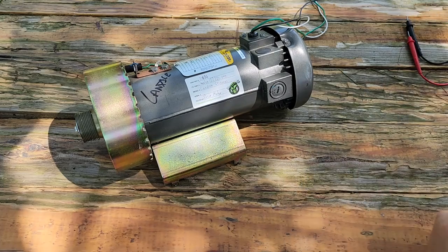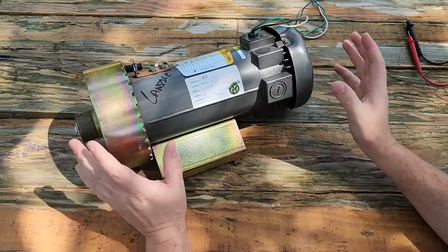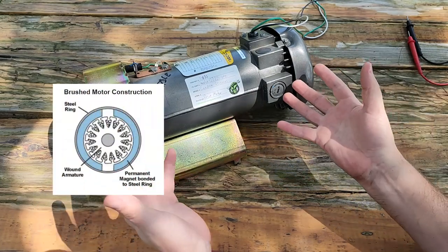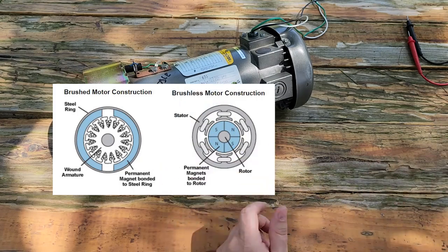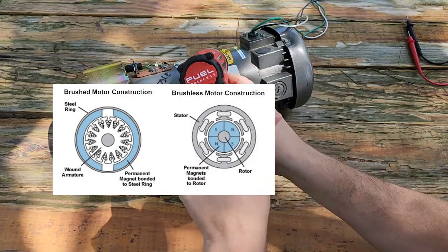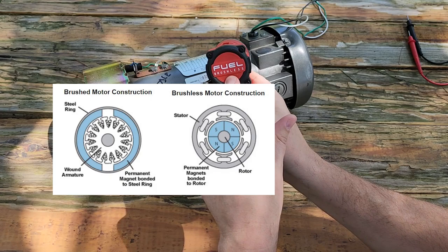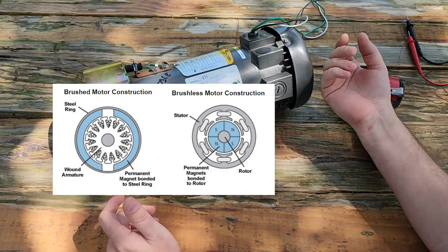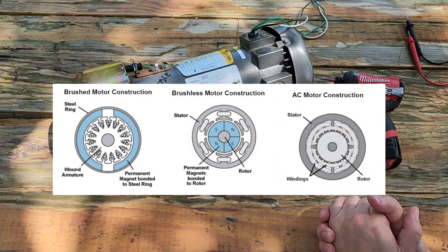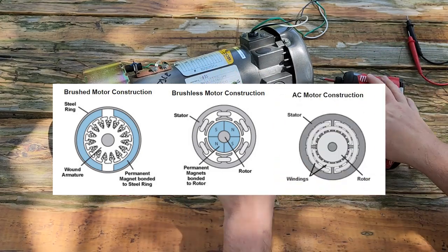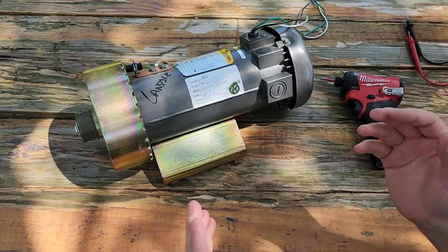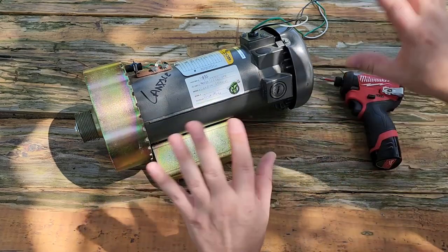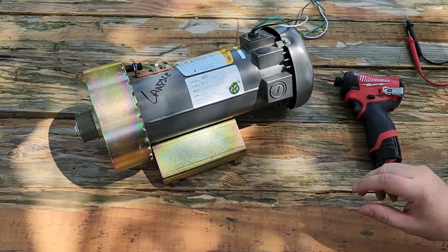First off, you should know that there are three main types of motors: brushed motors, brushless motors - here's a brushless motor, they're prominent telling you right on the back - and also an AC motor. Then there's the universal motor which can run on AC or DC, and you're going to see some similarities.